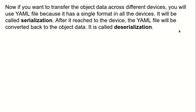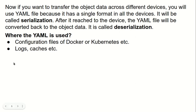If you want to transfer object data across different devices, you will use a YAML file because it has a single format across all devices. Using one YAML file with that single format, transferring it across different devices is called serialization. After it reaches the device, the YAML file is converted back into object data, which is called deserialization.